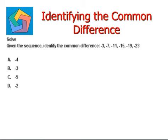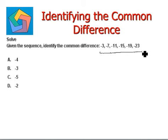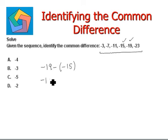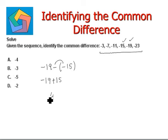Next question: given the sequence negative 3, negative 7, negative 11, negative 15, negative 19, and negative 23, identify the common difference. Let's take negative 19 minus negative 15. A negative times a negative is positive, so this becomes negative 19 plus 15. We subtract: 19 minus 15 is 4, and we keep the sign of the bigger number, giving us negative 4.